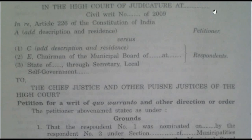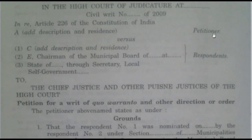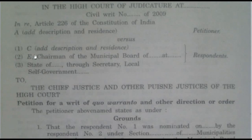At the top, you mention the name of the High Court, then the civil writ number and year. Then the party names: on the left-hand side the residence, and the petitioner versus the other party — the respondent — on the right-hand side. You can see there are three parties added. If there are more than one respondent, you can add them as first, second, third, fourth and so on.